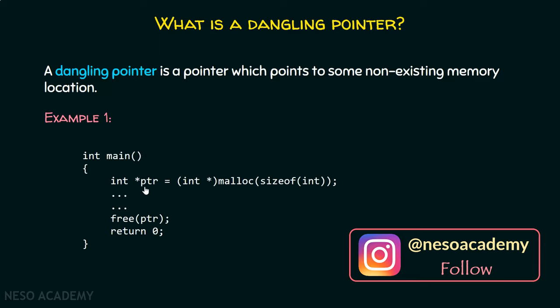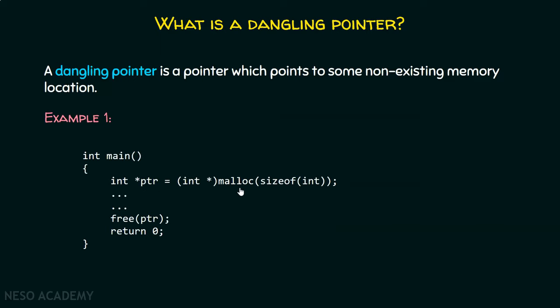For example, here in this case, PTR contains the address of the first byte of the memory allocated by malloc. Malloc is the function which allocates memory dynamically and simply returns the address of the first byte of that memory. That address is stored in the PTR pointer, so PTR contains the address of the first byte of that memory location.